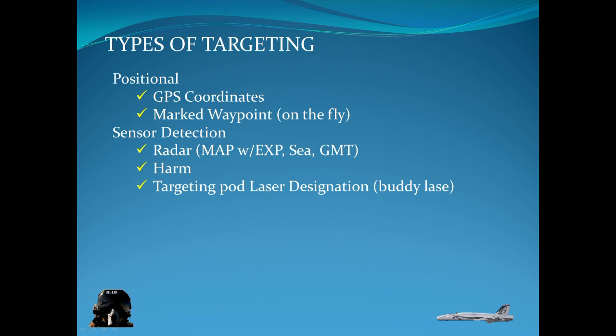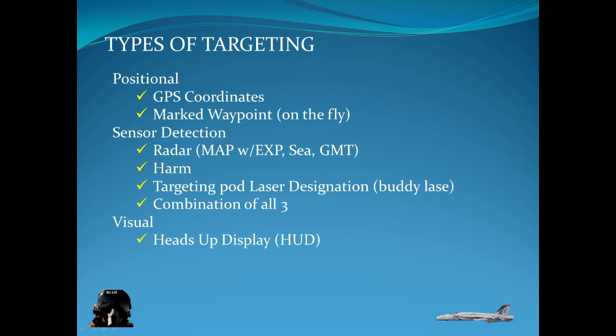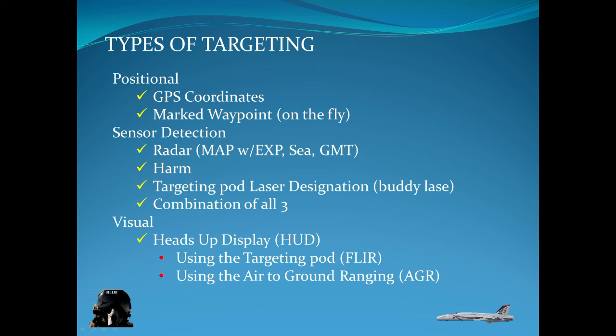There's a targeting pod — you can use your targeting pod, look at the point on the ground, designate it and fine tune your delivery. And a combination of all three — you can send targeting data between each other. You can even use your FLIR to monitor your CCIP dropping so you can identify your target before you hit it. And finally there's visual: there's the heads up display, I'll show you how to target using the HUD, using the targeting pod in the HUD, and using the air-to-ground ranging AGR in the HUD. So those are the visual modes.